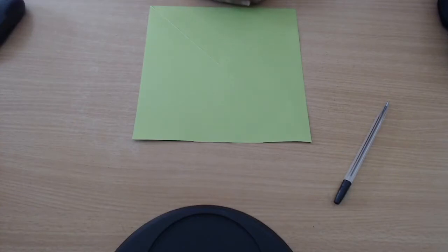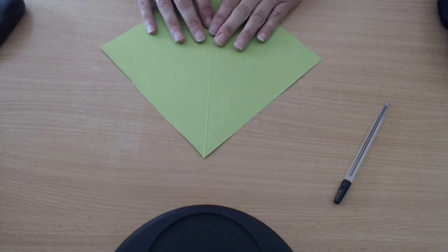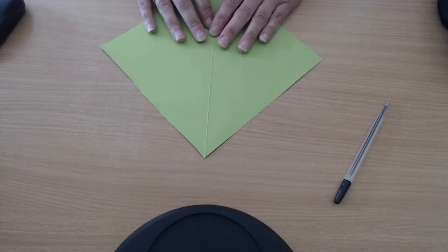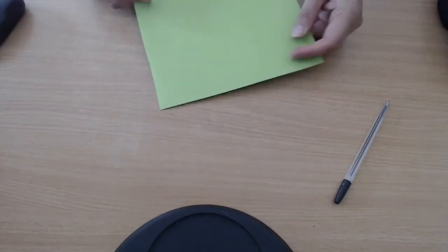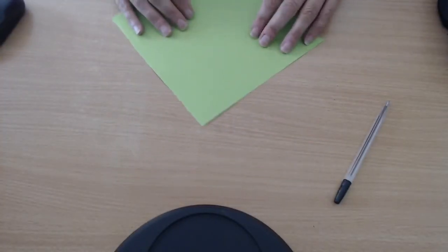So today we're going to make an origami behavior helper. Now that's quite hard to say. I thought by calling it a behavior helper it might make you think, oh, what's one of those? This fits very well with our story today because it might help you make the right decisions when you're deciding how to behave.